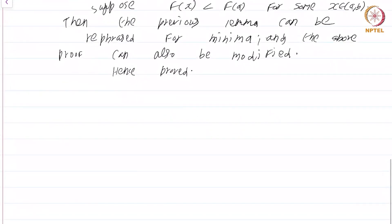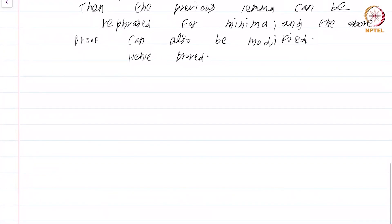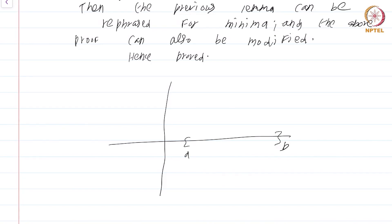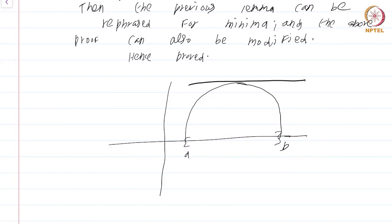This is a geometrically obvious theorem that still requires a rigorous proof. What Rolle's theorem is saying is: if you have the graph of a function over [a, b] where the function returns to the same value — as drawn here with f(a) equal to f(b) — then the curve must at some point become flat and turn. At that point, the tangent line has slope 0. So it proves something geometrically obvious in a rigorous way.